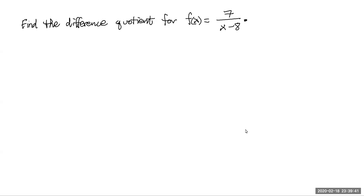Let's find a difference quotient for the rational function f of x equals 7 over x minus 8. The first thing we want to do is actually write the difference quotient. Remember that it's f of x plus h minus f of x, all over h.